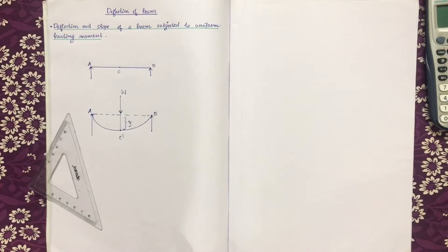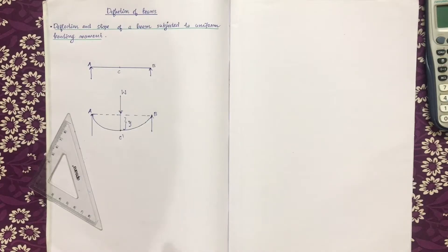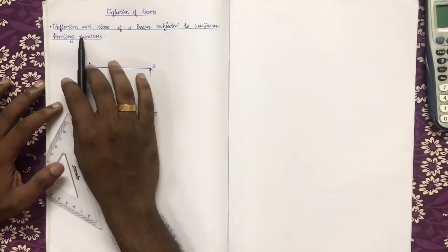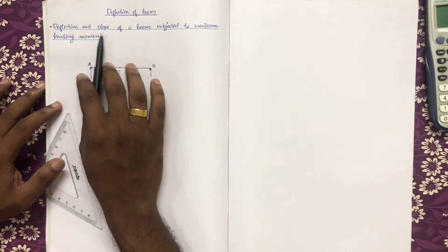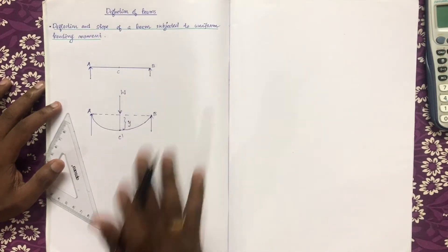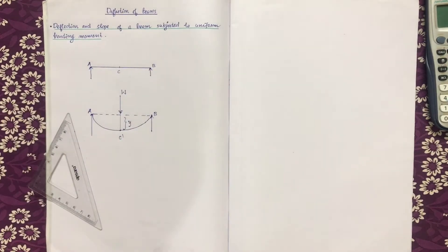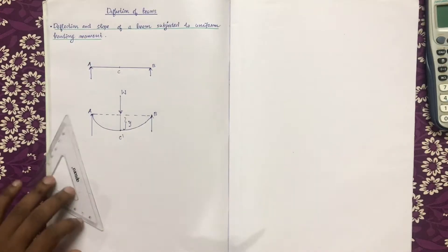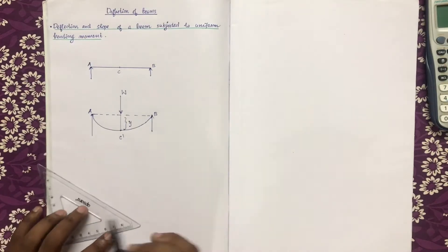For deflection of beams, there are many methods. One direct method uses equations — substitute into problems. First, we find the deflection and slope. We find the general expression. Suppose we derive a general expression.